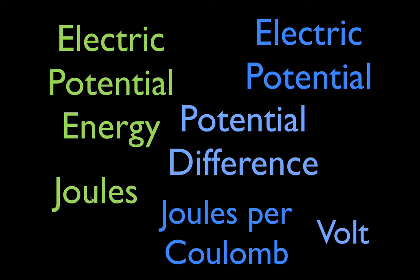Electric potential energy is measured in joules. Electric potential, or simply potential, which we're going to talk about in this video, is measured in joules per coulomb, which we call the volt. There is also electric potential difference — sometimes referred to as potential difference — which is also measured in joules per coulomb, and I'm going to talk about that in part two. This is part one: electric potential.